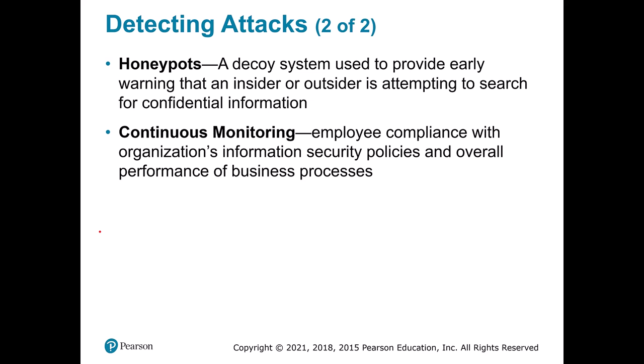We talked about honeypots — decoy systems — already. Continuous monitoring means making sure we're keeping track of what's happening at all times. It can even include a system that reads all emails going out of your organization, looking for things like Social Security numbers being sent. It's easy for an employee to take an Excel file with sensitive information and email it to their personal account. A good continuous monitoring system will track that, stop it, and notify someone.